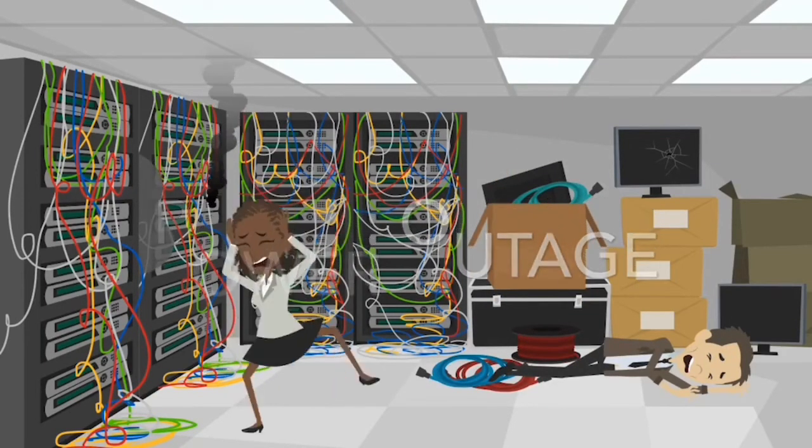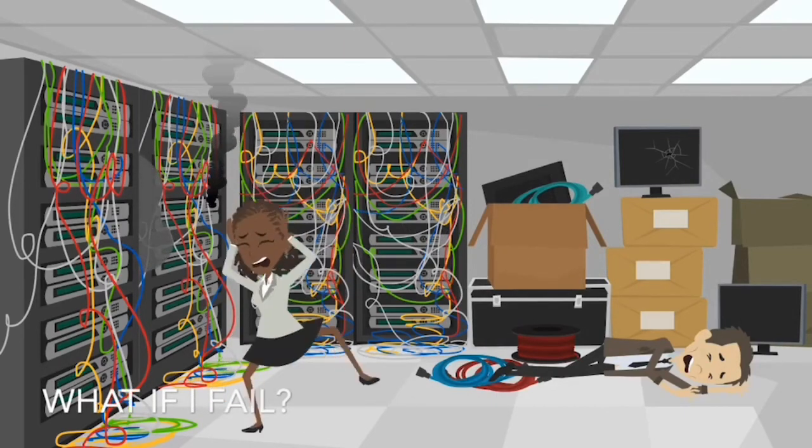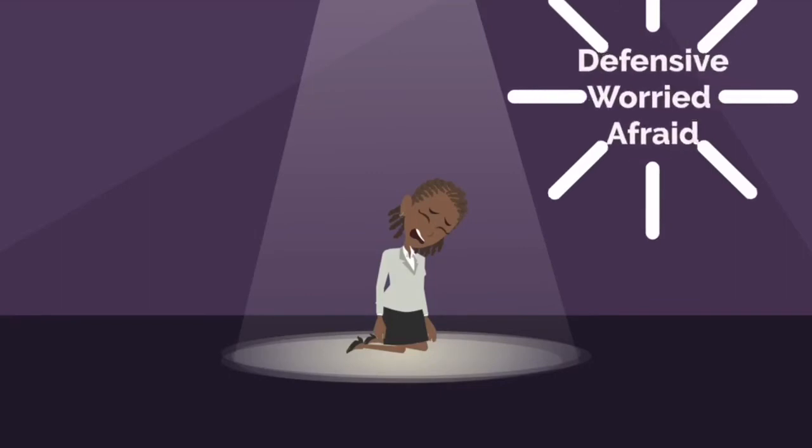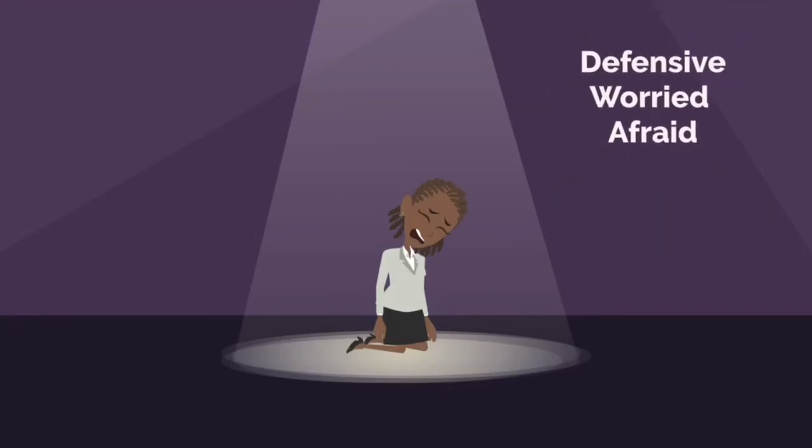She would have these what I call power outages, and her power would go away, would drain out, and she would be terrified every time she was going to speak in public, even though she got accolades. Inside of herself, she was terrified, and anytime she got criticism or feedback, she would become incredibly defensive, worried, afraid that she now was failing.